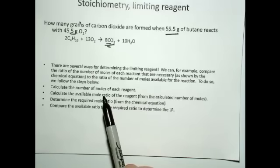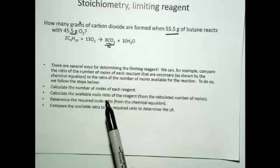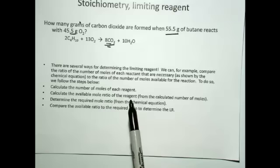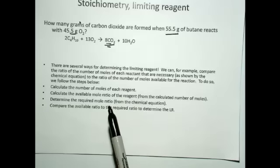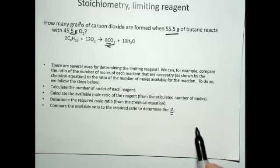So to do that, you have to calculate the number of moles of each reagent, then you calculate the available mole ratio of the reagents, then you determine the required mole ratio from the chemical equation, and then you compare the available to the required to determine which one is the limiting reagent. That's what that means.